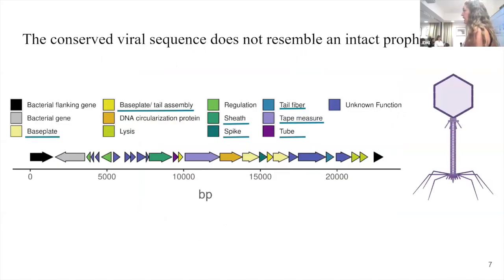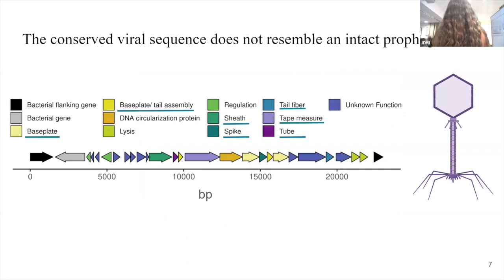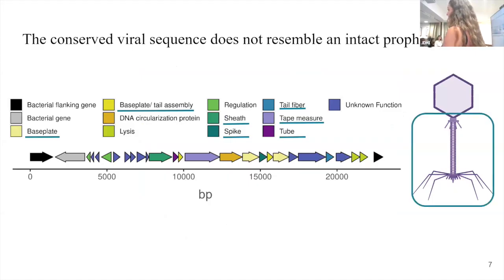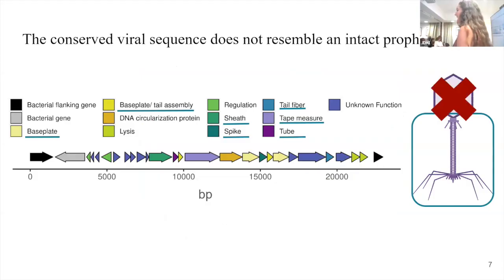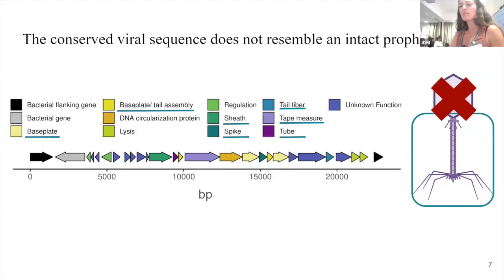Looking closer at one of the viral sequences, they were all made up of the same genes. We found a bunch of prophage tail-like genes. At this point, we were dipping our toes in the phage field and had no idea what this could be, because we did not see any capsid, terminase, integrase, or prophage signature genes besides these tail genes. So we wondered: what is this? Is this a pseudogenizing prophage?